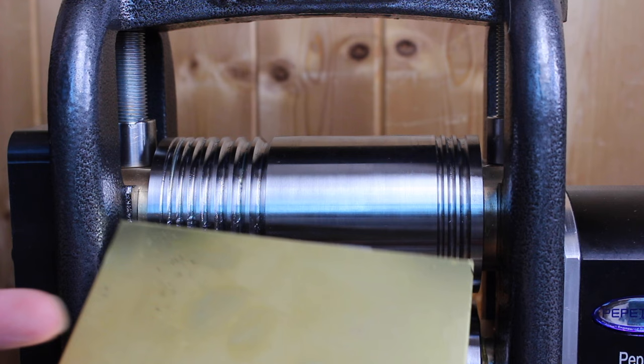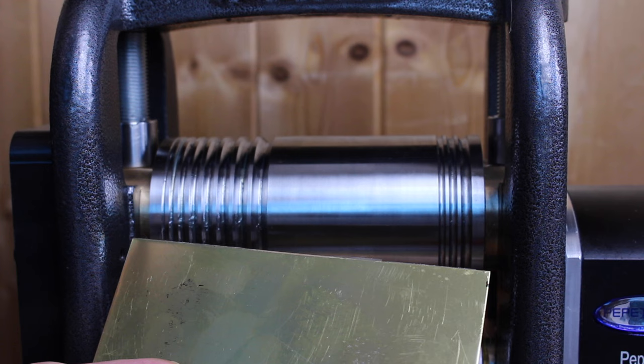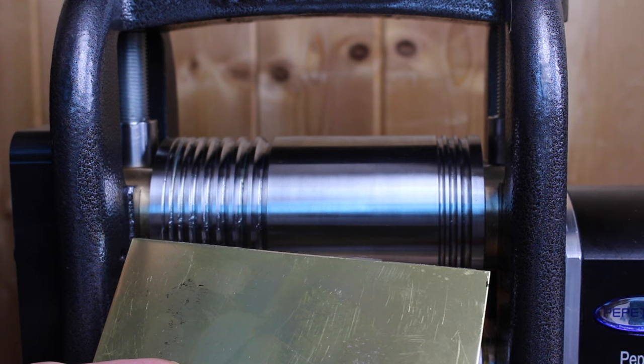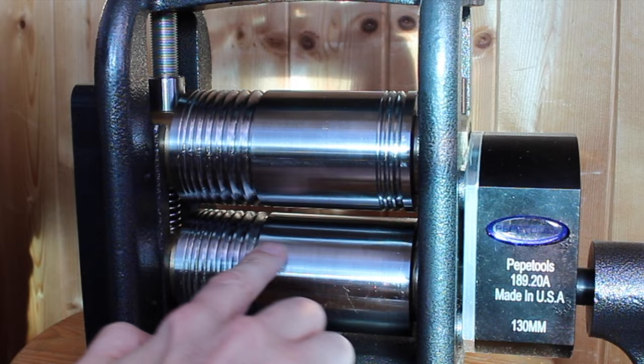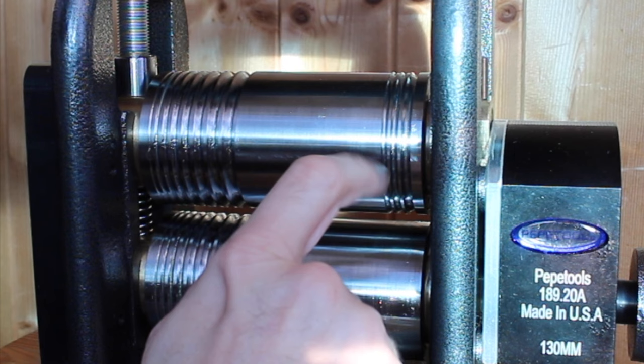So if you're just working with sheet or you just want it for embossing and texturing then the plain rollers offer you a wider flat area. So for example the 130 flat will allow you to roll up to 130mm wide flat sheet. But for most of us these combination rollers offer the best flexibility. So they're great for use with sheet, wire and bar. So this is the 130mm combination which I think offers the best of both worlds.